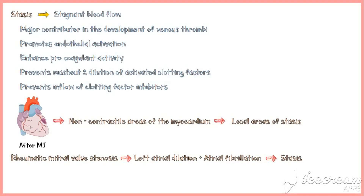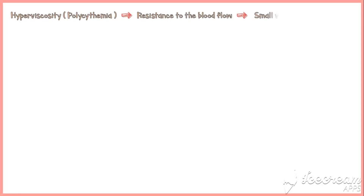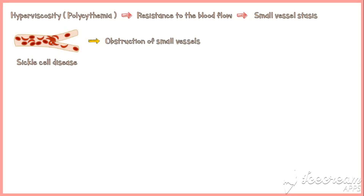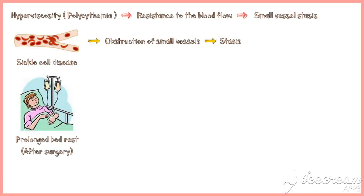Another place where stasis contributes to thrombosis is within aneurysmal sacs. Blood within an aneurysmal sac is in a state of stasis, while at the opening of the aneurysm, blood flow is turbulent. In conditions where viscosity of blood increases, such as polycythemia, there is resistance to blood flow and small vessel stasis occurs. In sickle cell disease, abnormal red cells clump together and obstruct small vessels. Prolonged bed rest, particularly after surgery, leads to stasis within the leg veins due to reduced muscular milking action, and may lead to venous thrombosis.